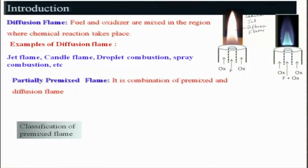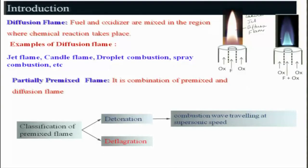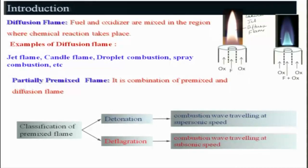The premixed flame is essentially a combustion wave, and it can be classified into two categories: deflagration and detonation. Detonation is a combustion wave traveling at supersonic speed. Deflagration is a combustion wave traveling at subsonic speed — the velocity at which the combustion wave moves is less than the speed of sound.